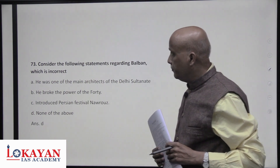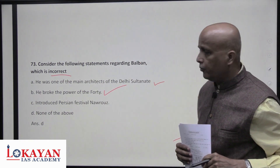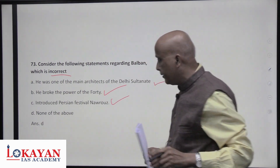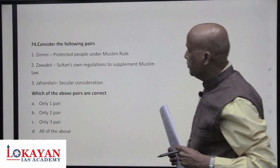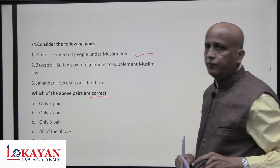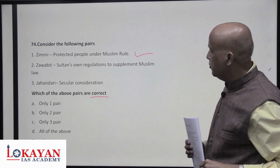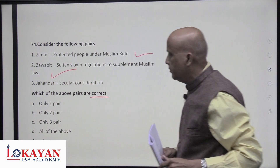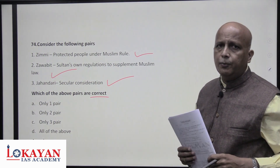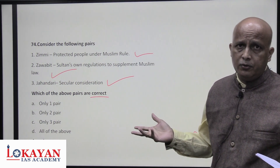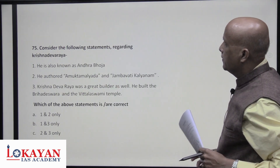Consider the following statements about Balban — which is incorrect? He was the main architect of the sultanate's character. He broke the power of the Forty (Chalisa/Chahalgani). He introduced the Persian festival of Nauroze. None of the above is incorrect — all statements about Balban are correct, so answer is D. Zimmi refers to people under Muslim rule who are protected, for which Jizya is collected. Zawabit are the sultan's own regulations to supplement Muslim law — correct. Jahandari is a secular consideration as opposed to Dindari (religious). All are correct.